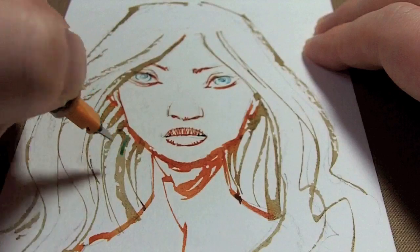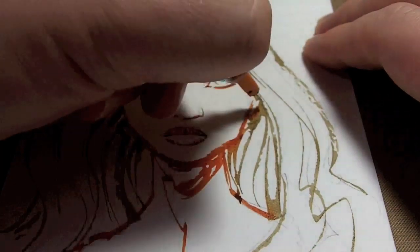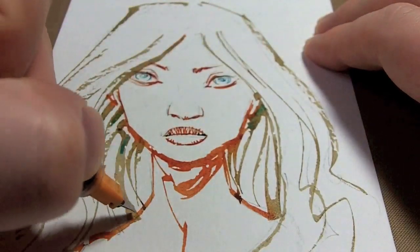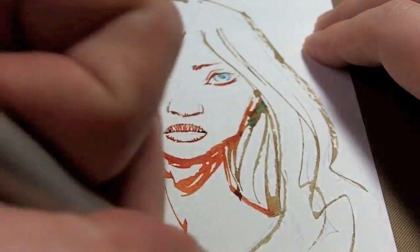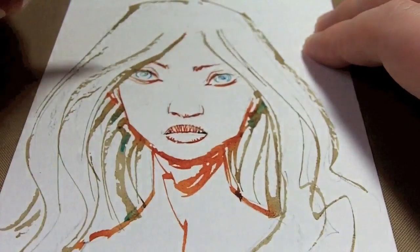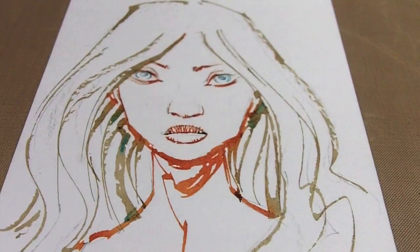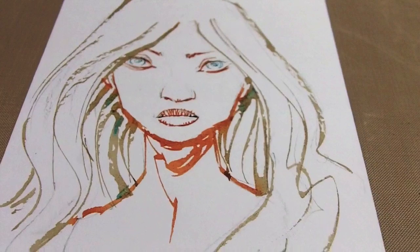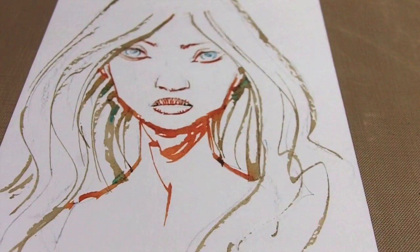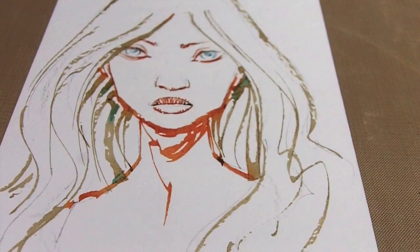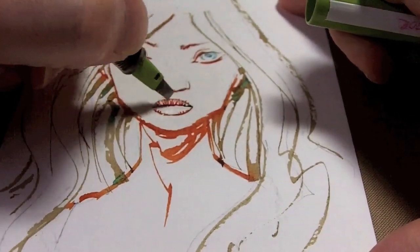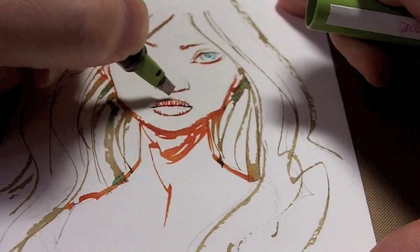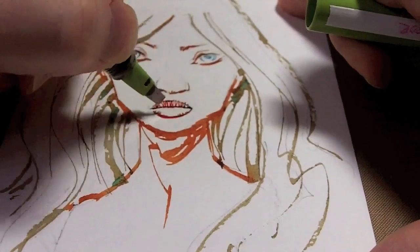And if I've used a color a little bit I like to move it around a bit. Include it in some other areas just to sort of balance things. So it's not just all one color in one spot. Plus I mean I love the gradations. You can just keep adding different colors to the wet ink.